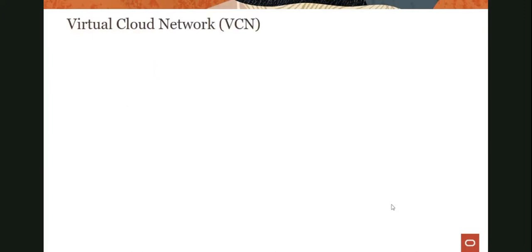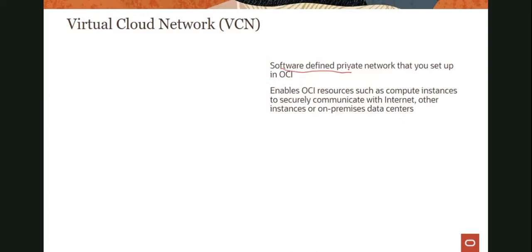Let's look at what a virtual cloud network is. A virtual cloud network is a software-defined private network that you set up in OCI. What we mean by software-defined is you get access to the VCN but not the underlying hardware, because it's all in software. It enables your resources such as compute instances to securely communicate with the Internet, with other instances running in Oracle Cloud Infrastructure, or your on-premises data center. Those are the three key scenarios where your instances need to communicate, and in order to do that communication, you need to have them running inside a virtual cloud network.